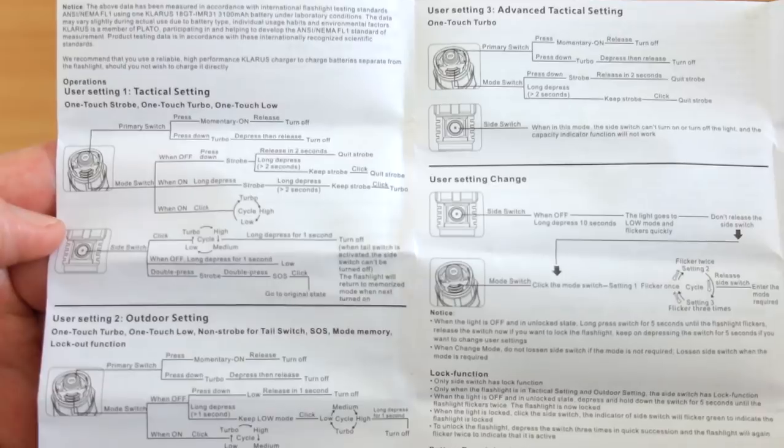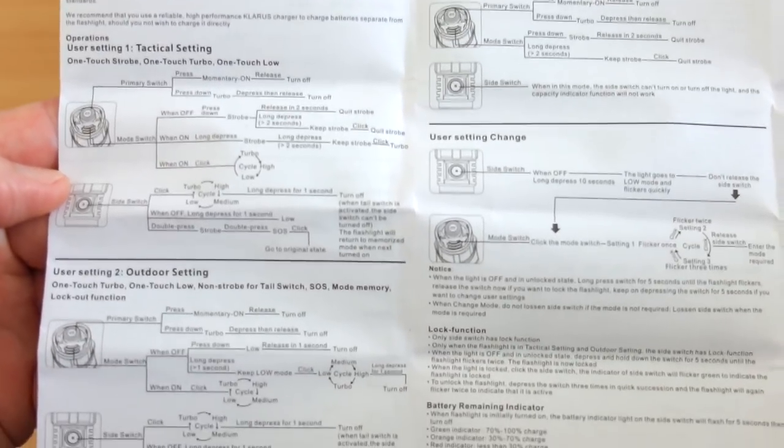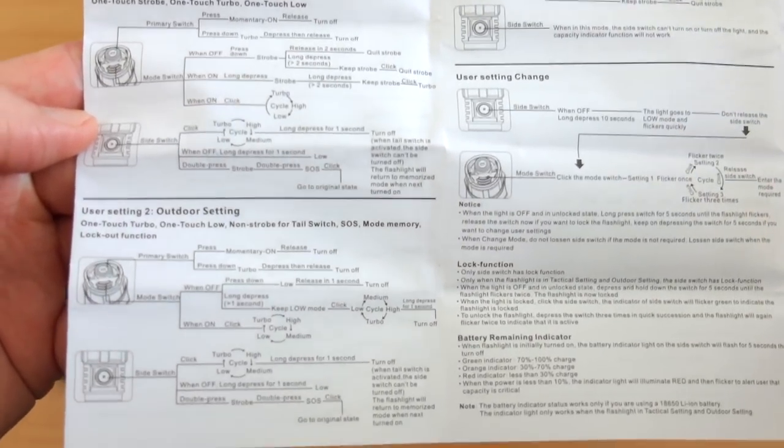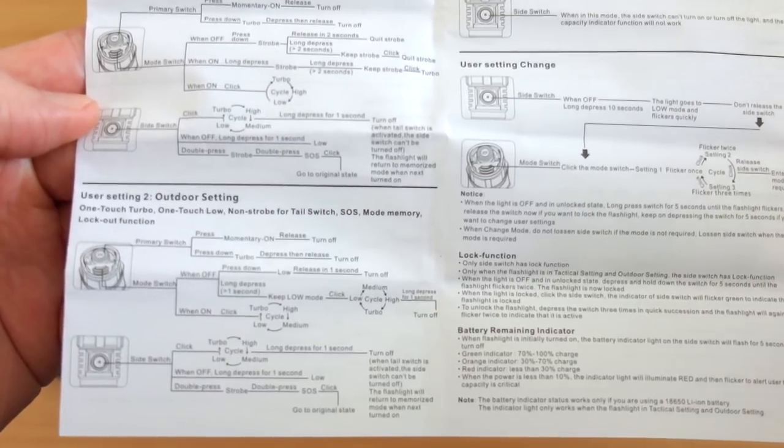This is one user manual that you want to read because you can switch between the settings and adjust the button layout to suit your own personal taste. You probably will have to read this if you've not used one of these Klarus torches before with the three buttons.